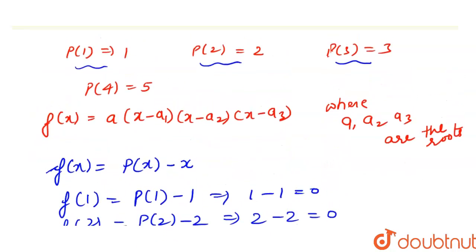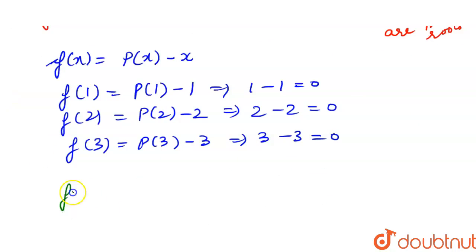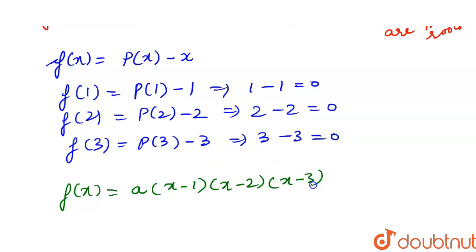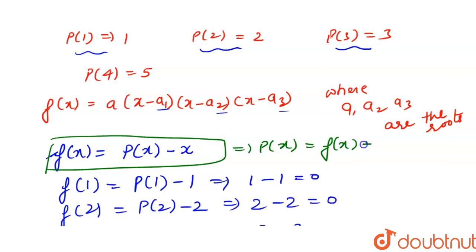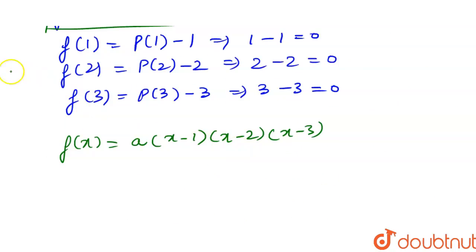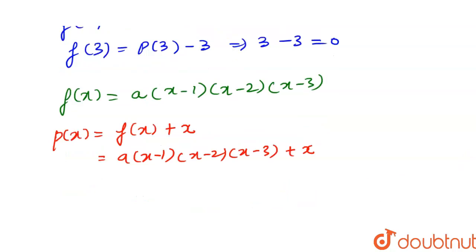We put a1, a2, a3 as 1, 2, 3, giving us f(x) = a·(x - 1)·(x - 2)·(x - 3). Since f(x) = p(x) - x, we can say that p(x) = f(x) + x, which means p(x) = a·(x - 1)·(x - 2)·(x - 3) + x.